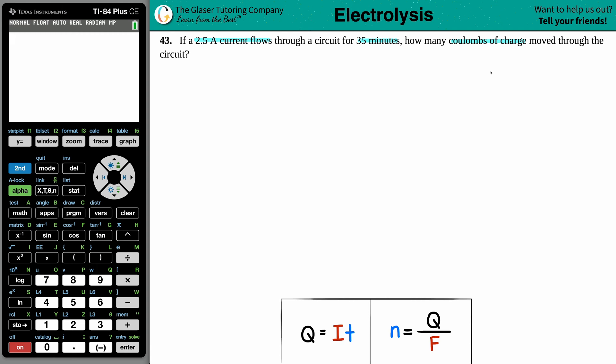Okay, so we have some variables here. They told us we have 35 minutes and minutes is a type of time, so we have a t variable. And they told us we had a type of current, in this case 2.5 amps.